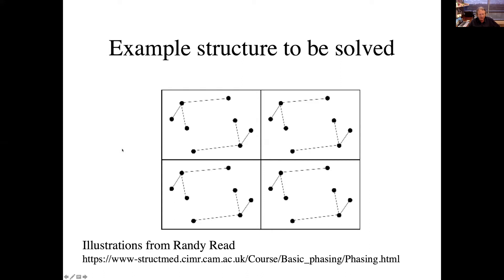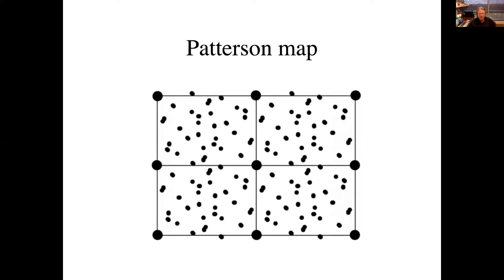Let me describe that more carefully. These illustrations come from Randy Read's course on basic phasing. Imagine you have a structure with a certain motif in two-dimensional form — this is the final structure to be solved, but of course you don't know that at first. What you do know is that you can calculate the Patterson map knowing only the amplitudes of the diffraction pattern. When you do that for this structure you get something like this — it's kind of a mess but it has peaks corresponding to atoms. The problem is disentangling the Patterson map, which is the autocorrelation function of the electron density map.